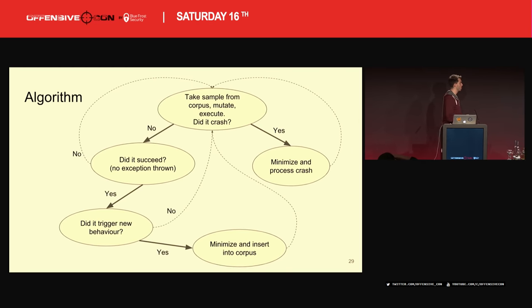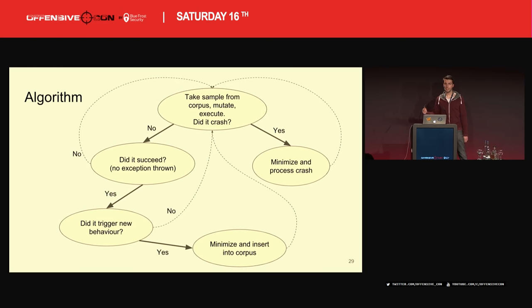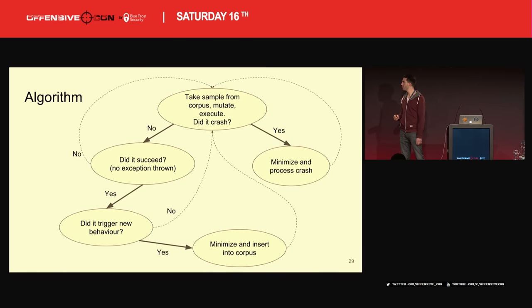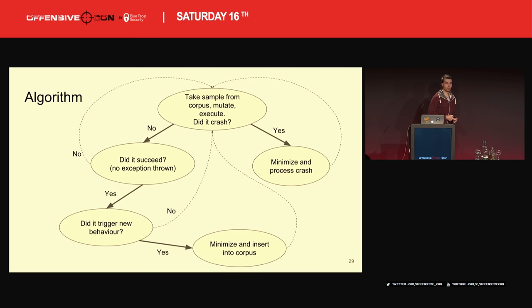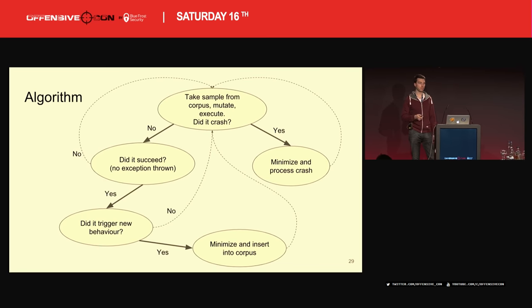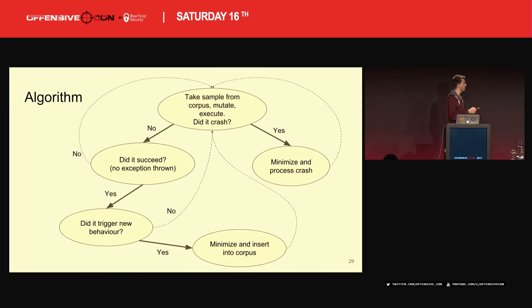The core fuzzer algorithm looks like this. In each iteration, it takes a sample from the corpus and executes it. If it crashed, it minimizes the crash and continues. If it didn't crash, it checks if it succeeded — meaning it didn't throw an exception. If it threw an exception, move to the next one. If it didn't throw an exception, check if it triggered new behavior like new edges. If it did trigger new behavior, minimize it, put it back into the corpus, and go back.